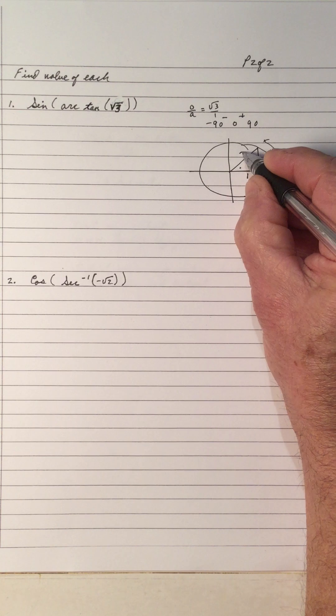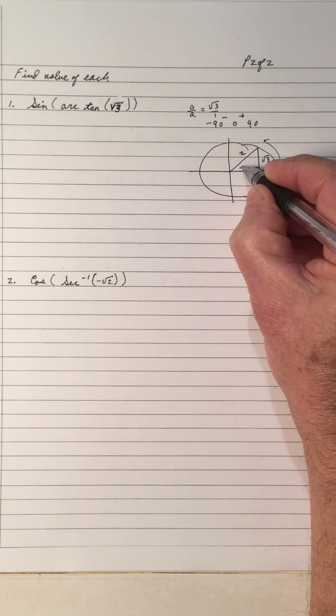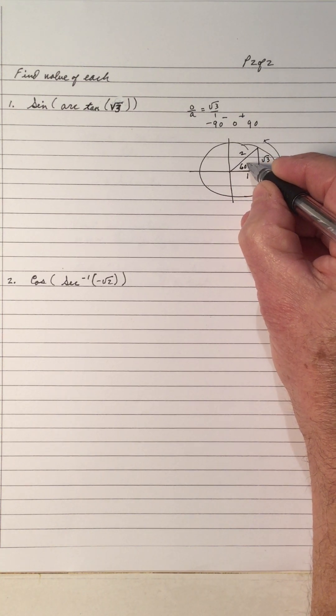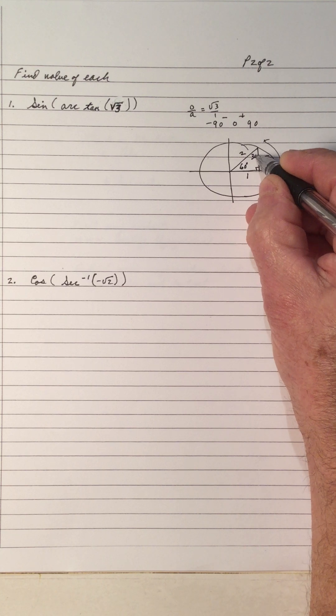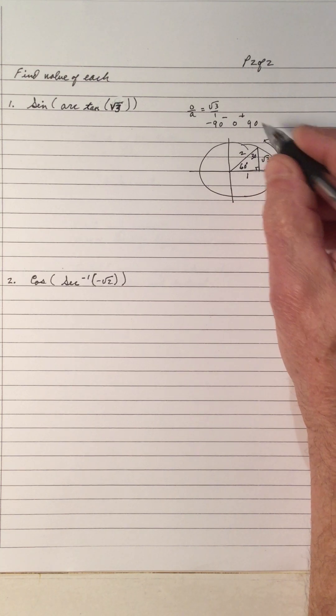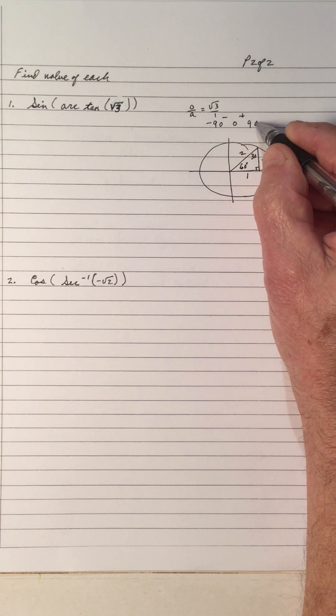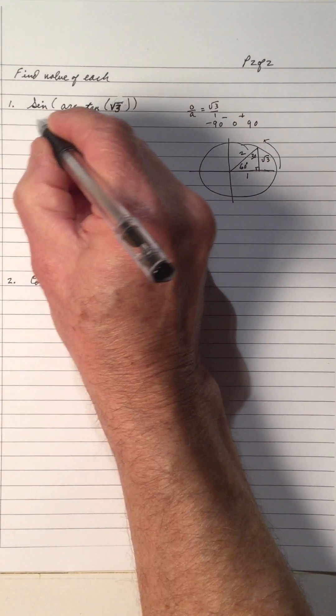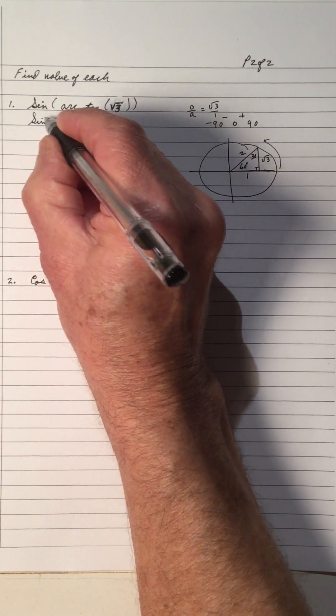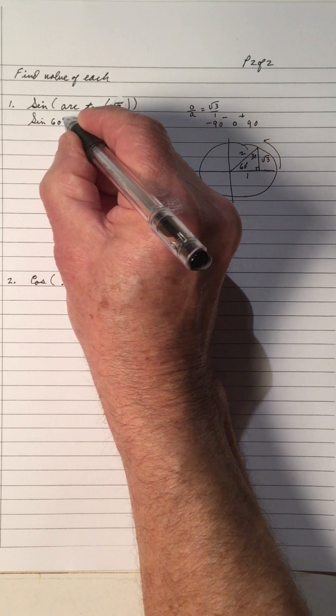And the adjacent is 1. They're all positive. So that's a 2. So because that's a root 3, this is a 60 degree reference angle. This one is a 30. So the arc tan got to be between 0 and 90 in the first quadrant. So that means the arc tan is a 60 degree angle.